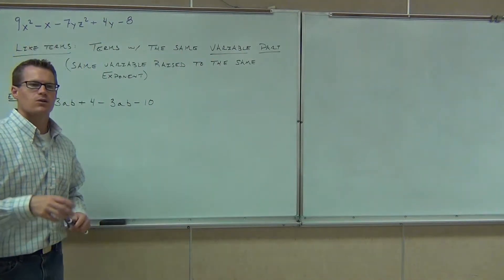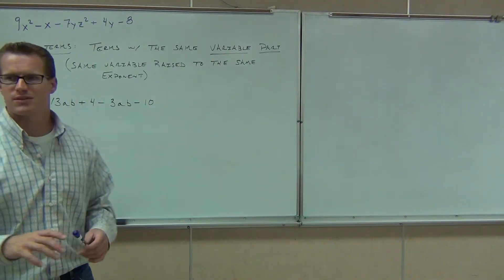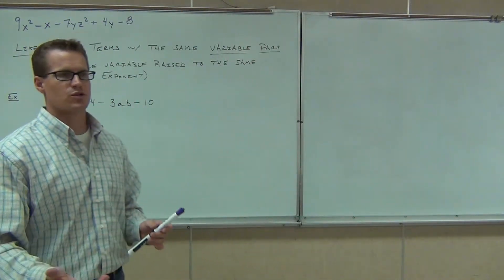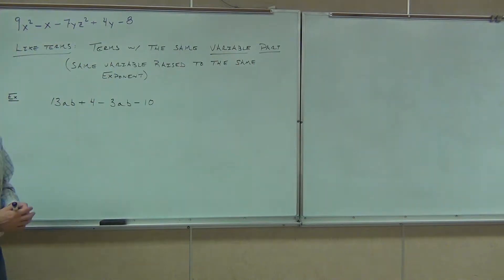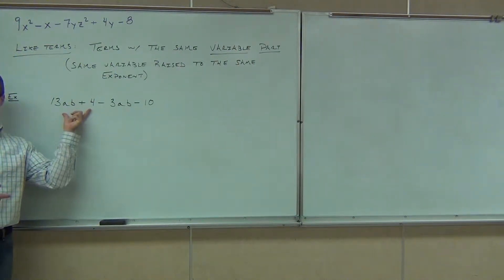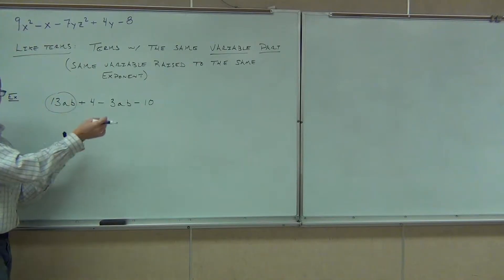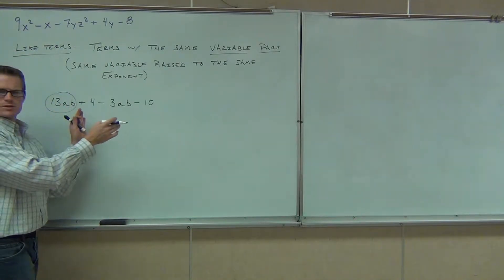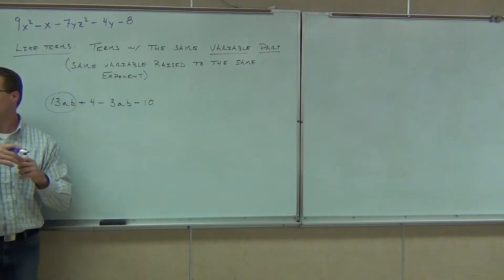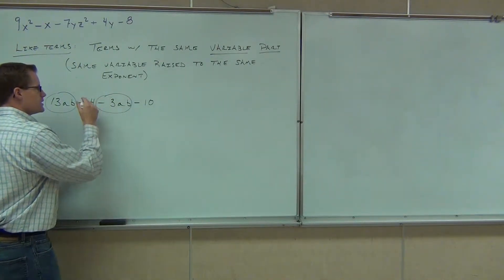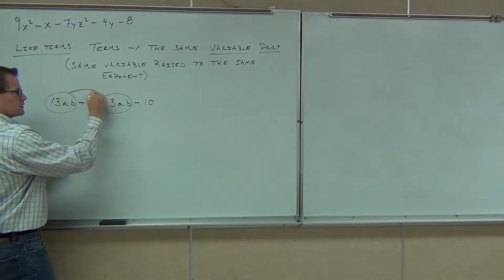What we're looking for now are like terms. Like terms have to have the same exact variable part. Basically, the same exact variables raised to the same powers. Do you see any like terms up here? 13AB and negative 3AB. Are these two like terms? No. No, this has a variable. That didn't even have a variable. What we're looking for are terms that have the same exact variable part. So, the 13AB and the negative 3AB. Good. Including the sign. These two right here are like terms.